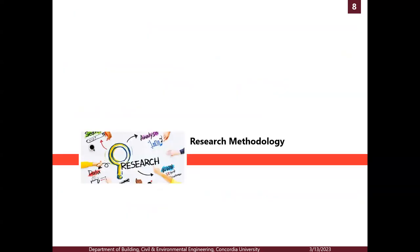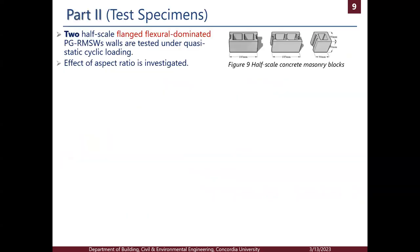Moving to the research methodology of the experimental part, in this work we are testing two half-scaled, flanged, flexurally dominated, partially grouted, reinforced masonry shear walls under quasi-static cyclic loading and fixed axial load. We are dealing with half-scaled masonry units, as shown in the figure — reduced size concrete masonry units made specially for research purposes.